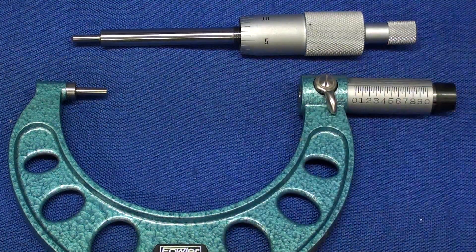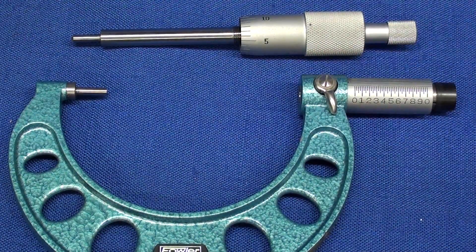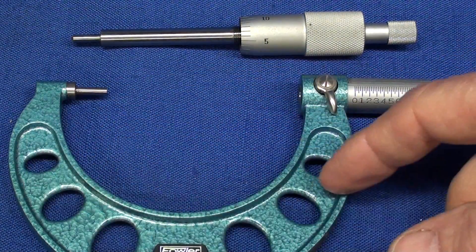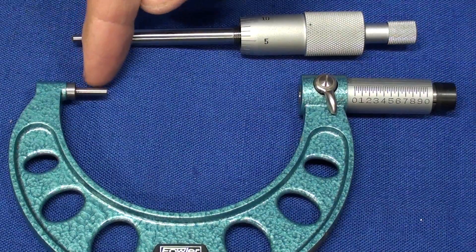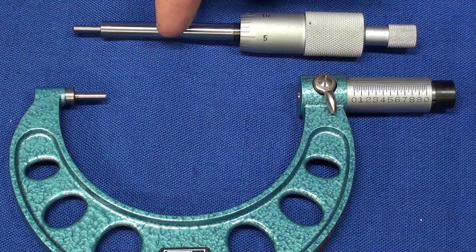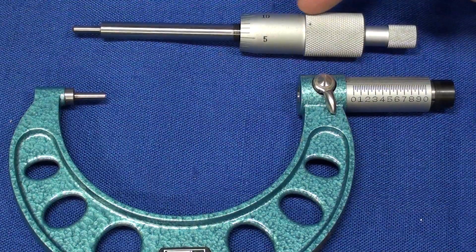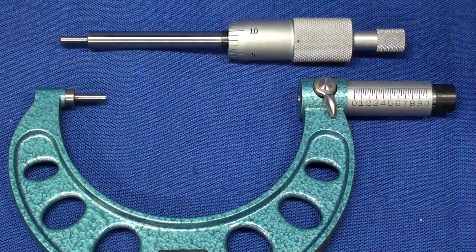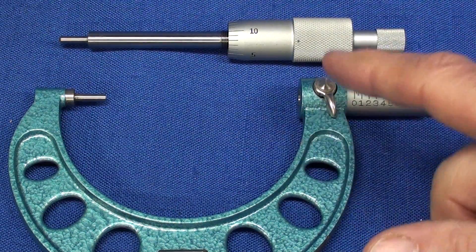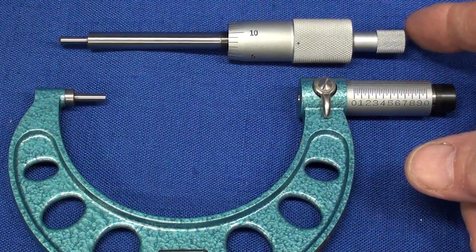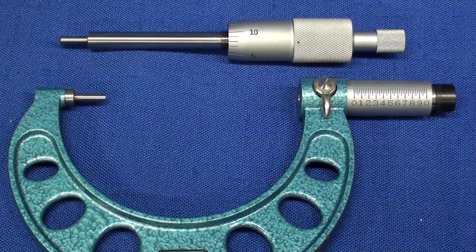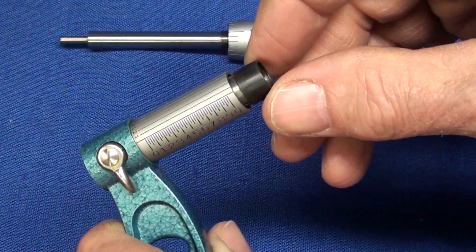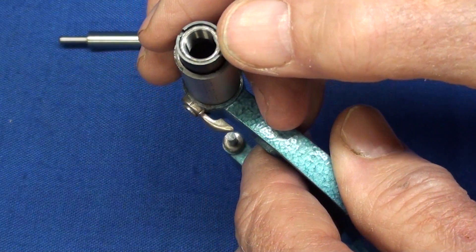Micrometers have really five major parts, but there's really more than that, but I used to teach just the five parts to the high school kids: the frame, the fixed anvil, the spindle, the barrel, and the thimble. And of course there's a thread in here, and that's 40 threads per inch. If you do the math, you'll know why. In this case, it also has the lock and the ratchet adjustment to check the tightness, and then there's some other parts here too.